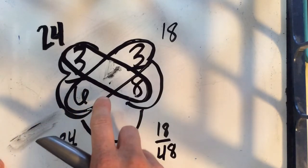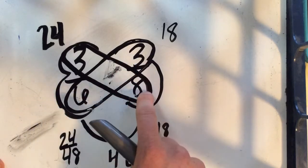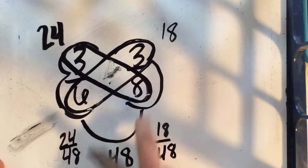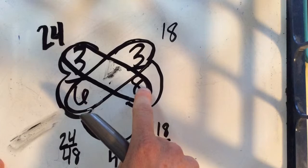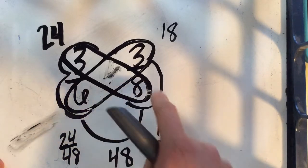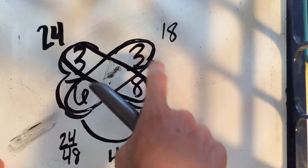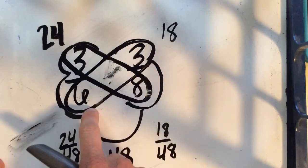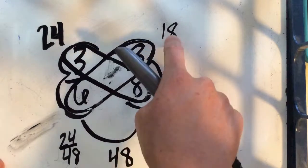Same thing for our other fraction. If I have three eighths and I'm trying to get to the common denominator of 48, I multiply eight times six to get 48. And since I multiplied the denominator by six, I also have to multiply the numerator by six. So six times three is 18.